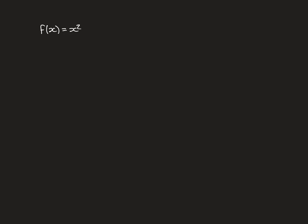I want to finish this video by doing an example of showing that a function is Riemann-integrable and finding the value of the Riemann-integral from the formal definition. The function we're going to consider is f(x) = x squared, a nice simple function, and the interval we're going to integrate over is the interval [0, 1]. Drawing a picture, the function f(x) = x squared on this interval should have an area under the curve, so it should be Riemann-integrable — that's what we're now going to formally show.